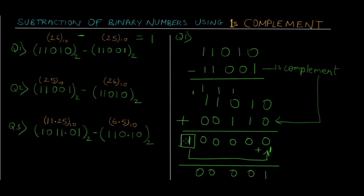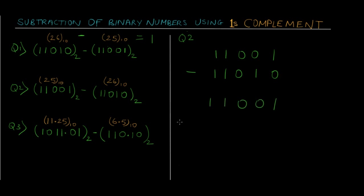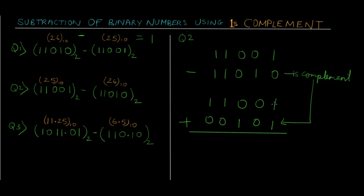For question two, we subtract a larger number from a smaller number. We have 11001 minus 11010. First, calculate the ones complement of the second number. The first number stays as 11001, and the ones complement of 11010 becomes 00101.